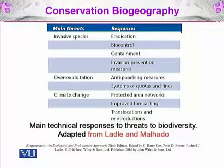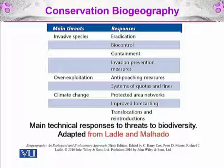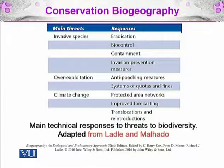If there are invasive species, then we can go for eradication — if a species from outside has damaged the existing environment, we will completely remove it. Bio-control is another option: we introduce other species which will control the invasive species. Containment means restricting invasive species to a specific area, and invasion prevention measures can also be applied.